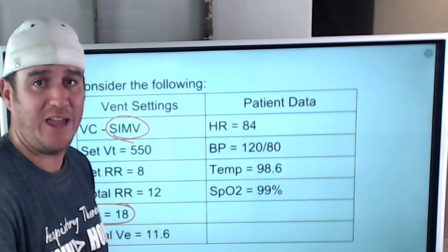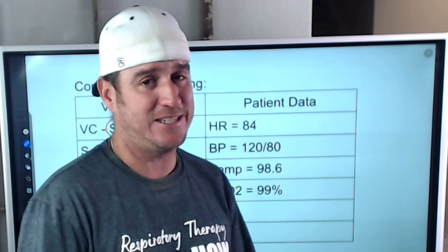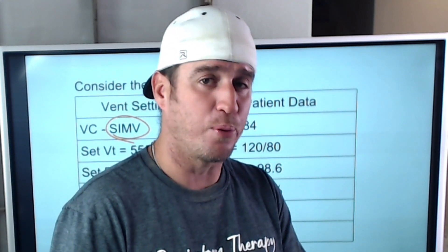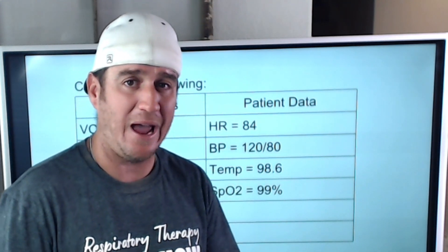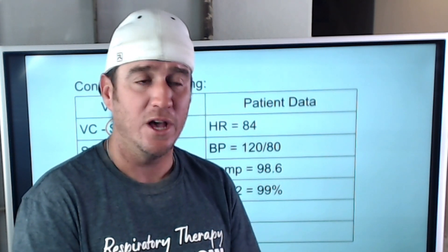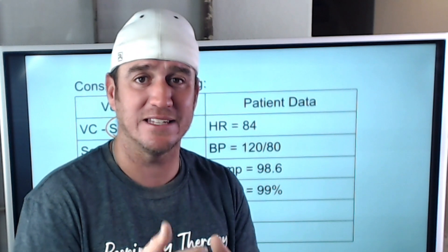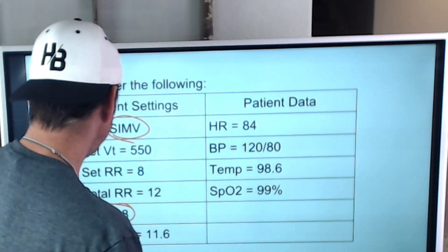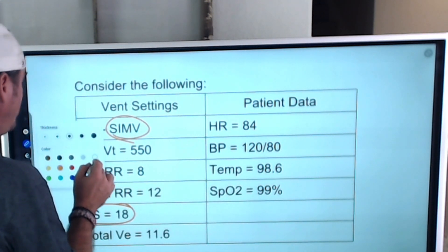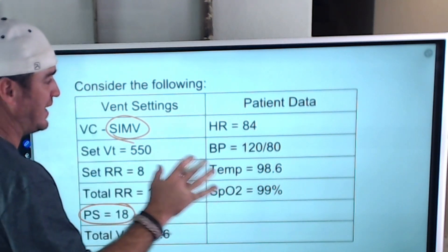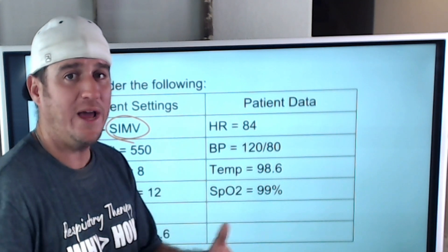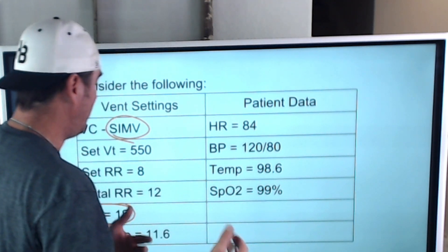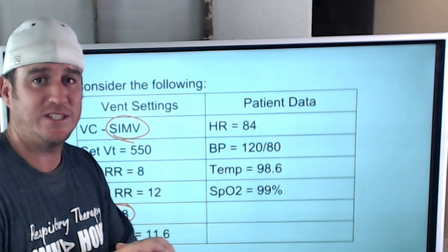We have a pressure support of 18, which seems excessive right off the bat — and I'm going to show you how we prove it's excessive. To assess the adequacy of pressure support, you have to assess spontaneous tidal volume. Let me show you a trick on how to determine what the patient's spontaneous tidal volume is in SIMV.